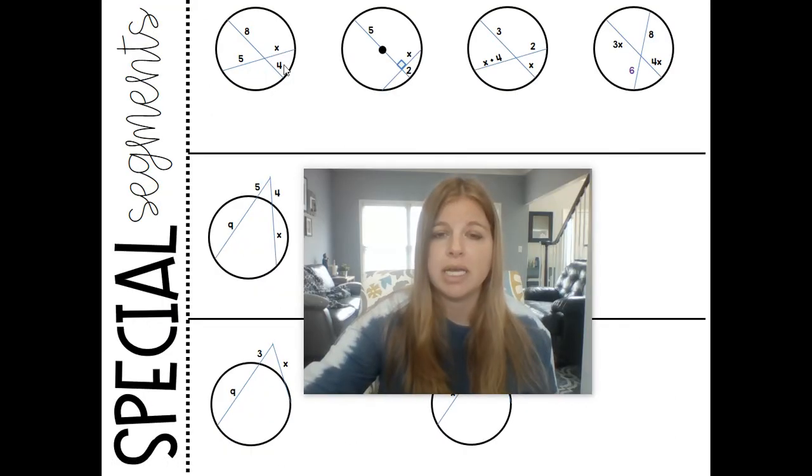So let's take a look. Here these are the chords that intersect within a circle, inside of the circle. So the way I would do the first one is I would be able to say that 5 times X, so these two segments together, is equal to the other two segments multiplied. Okay, 8 times 4, which then becomes 5X equals 32. Divide both sides by 5, and we get 6.2 as our answer. Pretty simple.